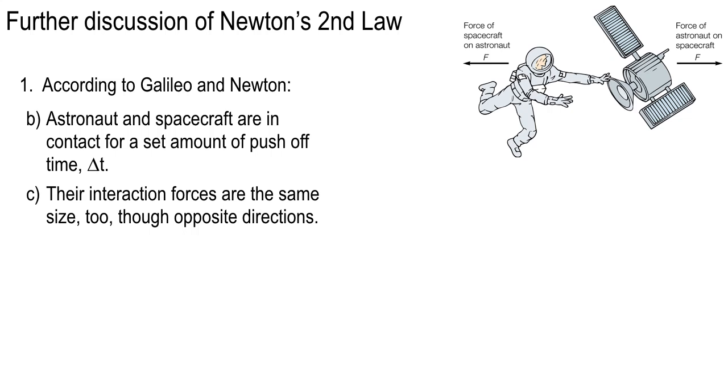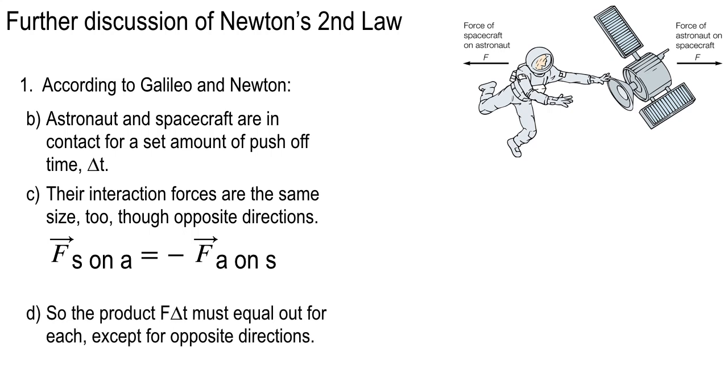Now, gravitation, if they're orbiting the Earth, staying in orbit, those would be external. But we're neglecting that. We're just assuming they're out there floating in space. The only thing that's different about the interaction forces is they're the same size but opposite directions. I wrote that down here in a vector statement: vector F, S on A, spacecraft on astronaut, is equal to the opposite of vector F, astronaut on spacecraft.